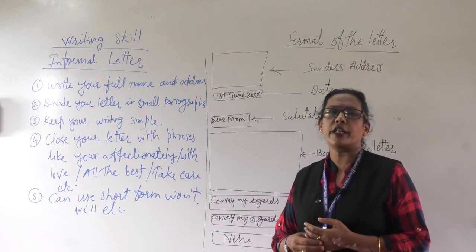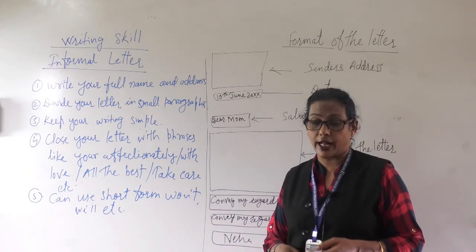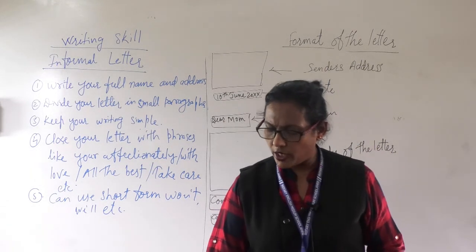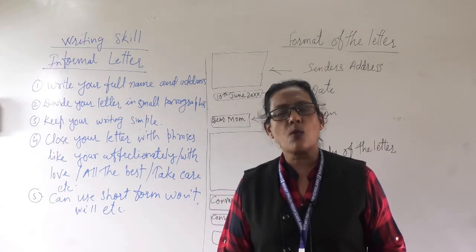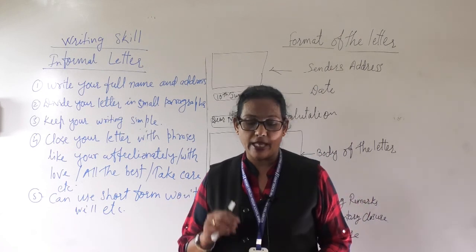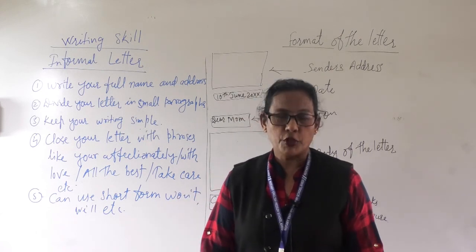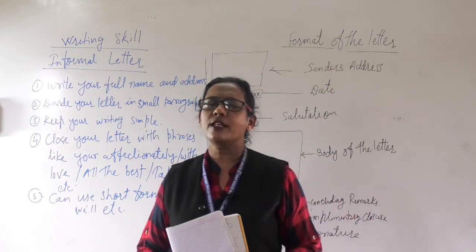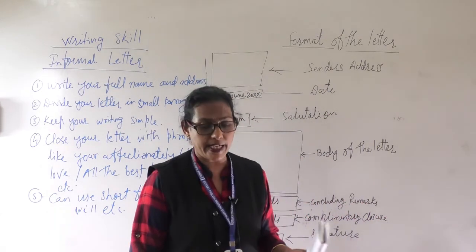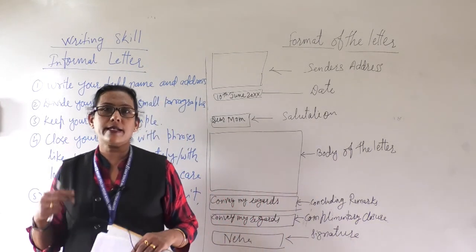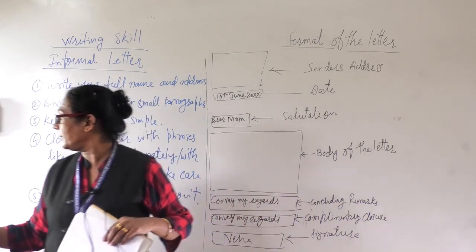And the last is the signature — here you can write your signature, or X, Y, Z, A, B, C as a placeholder. Dear children, this informal letter is very easy to understand.